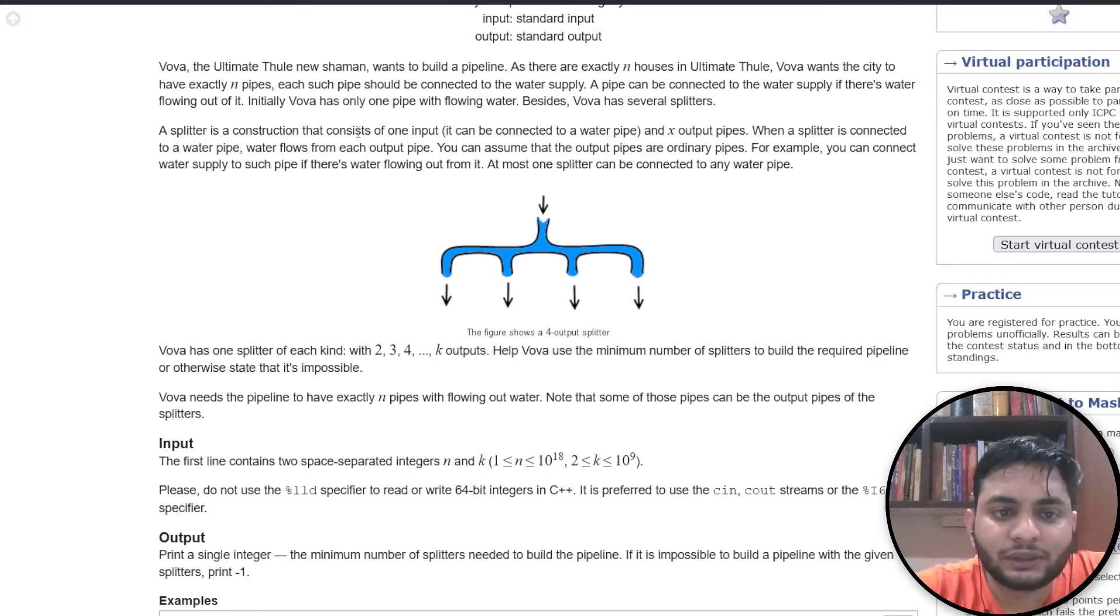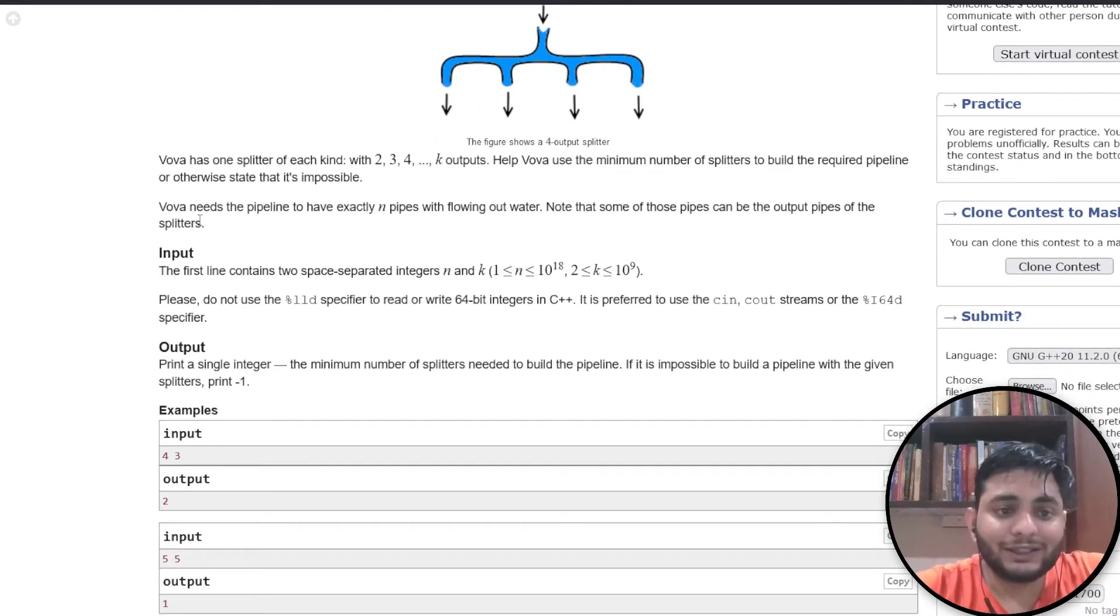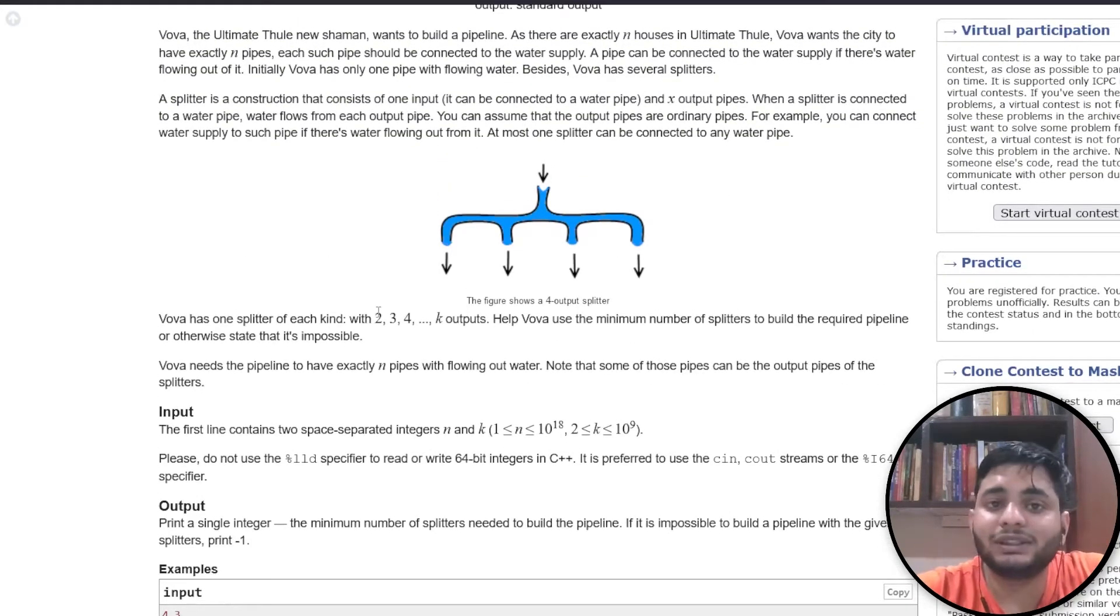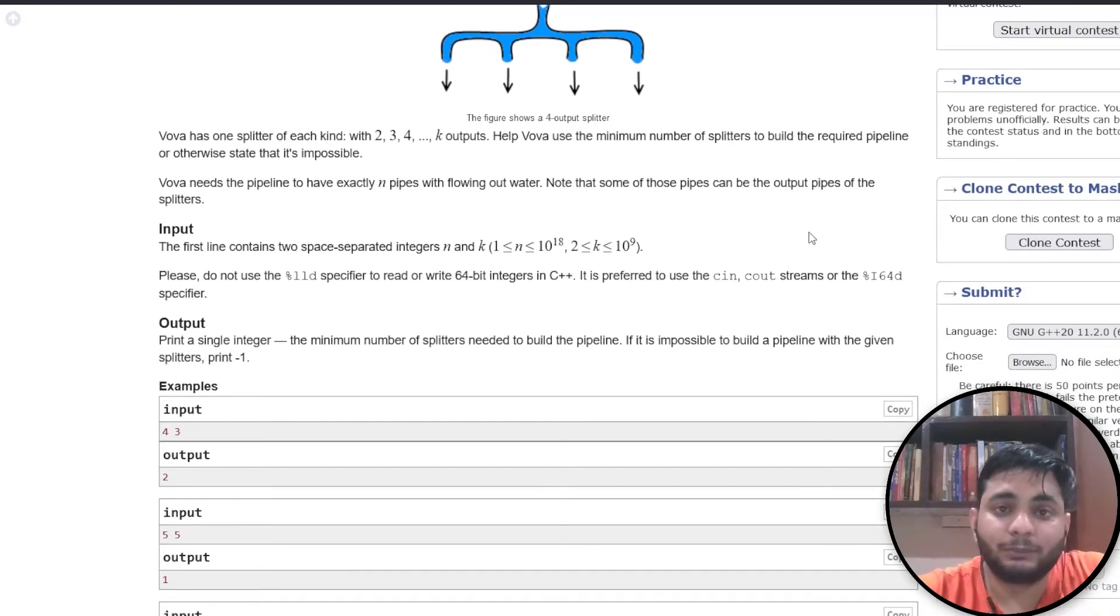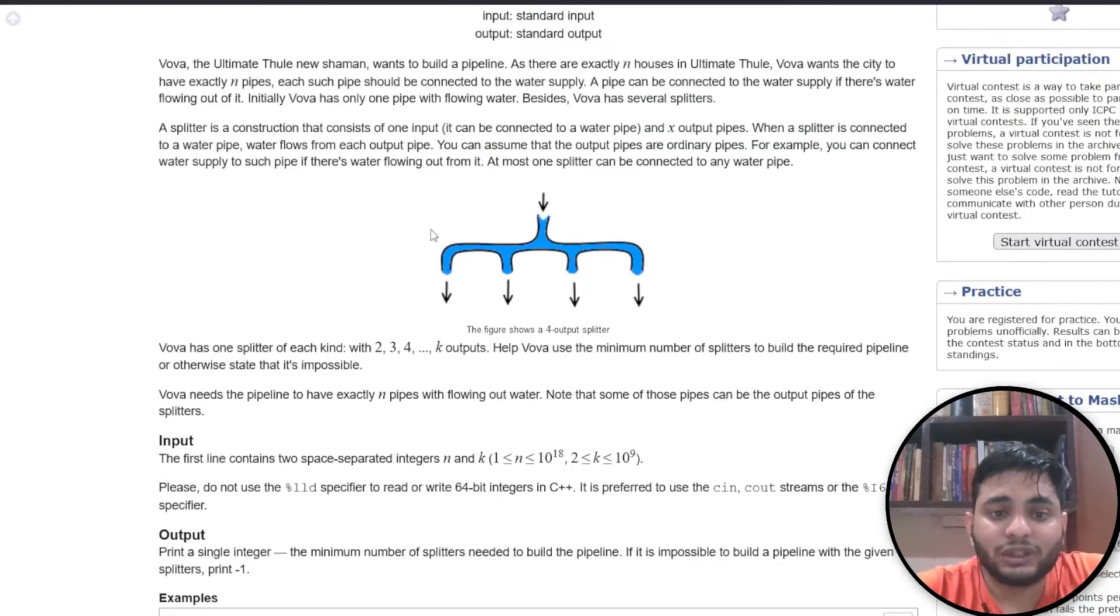A splitter is a construction that consists of one input and x output pipes. When a splitter is connected to a water pipe, water flows from each output pipe. We have splitters of each kind with two, three, four selected outputs up to k. We need to use the minimum number of splitters to build the required pipeline, otherwise state that it is impossible.